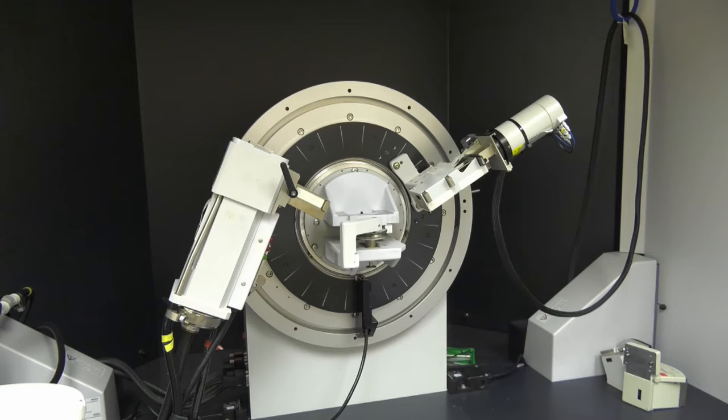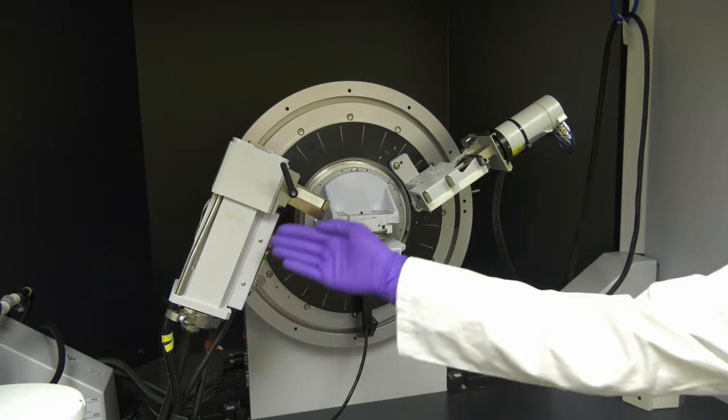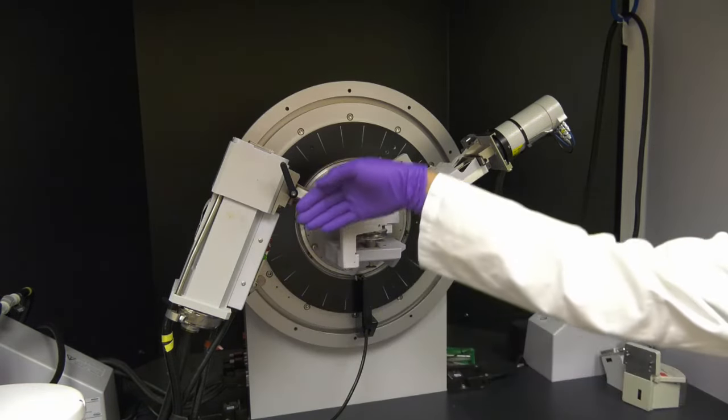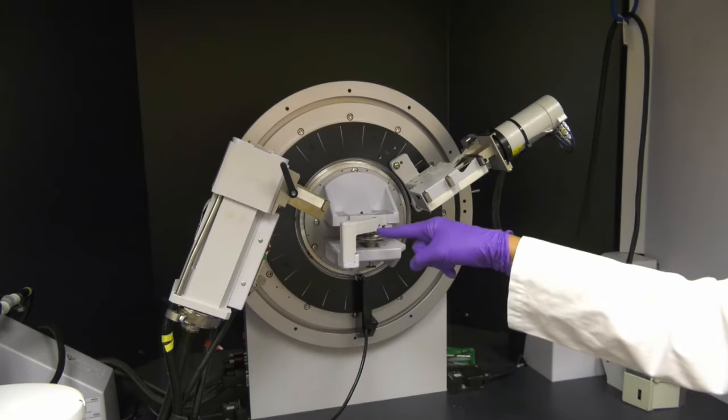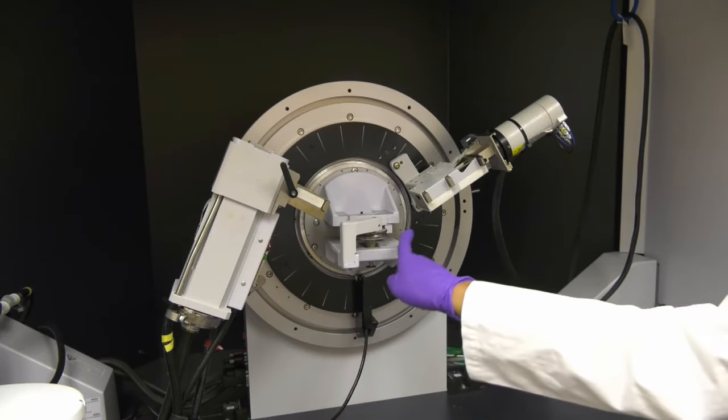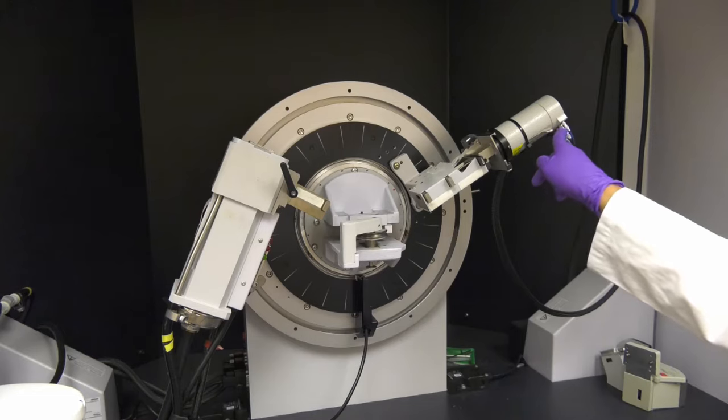X-rays are generated by accelerating electrons into a copper target. X-rays are directed towards the sample where they diffract. Angles of constructive interference will diffract X-rays into the one-dimensional detector, which transduces the X-ray intensity.